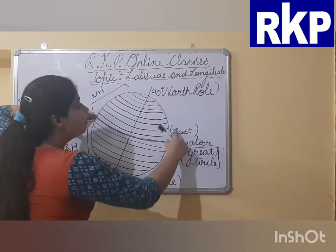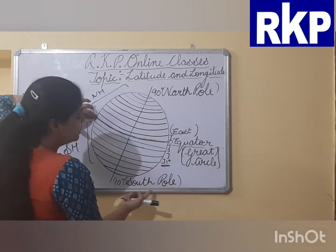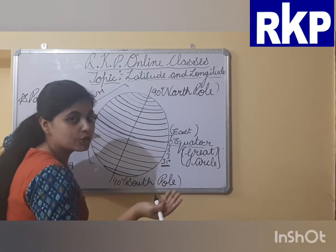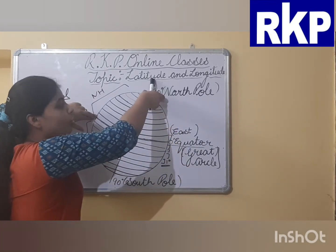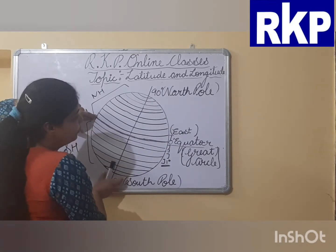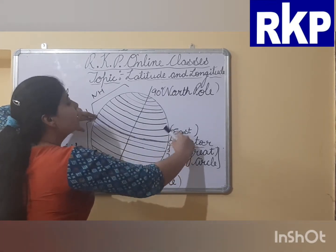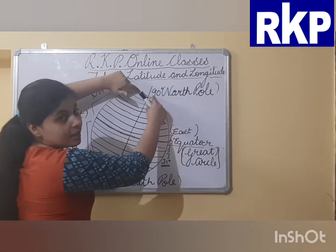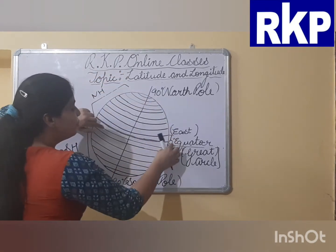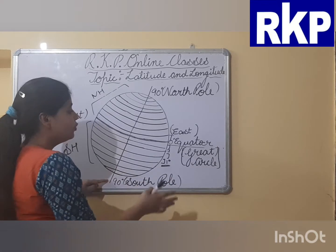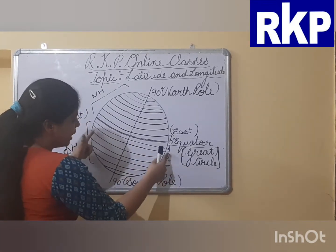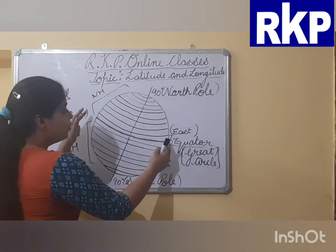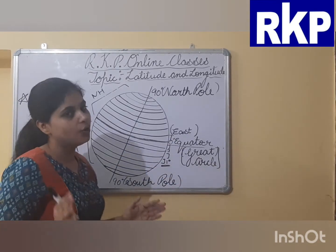But if you move from the equator to the north pole — the top point on the globe is the north pole, the bottom is the south pole — as you move from equator to the north pole, the size of latitude lines goes on decreasing and becomes smallest at the north pole. Similarly, if you move from the equator to the south pole, the size of latitude lines goes on decreasing and is at a minimum at the south pole.